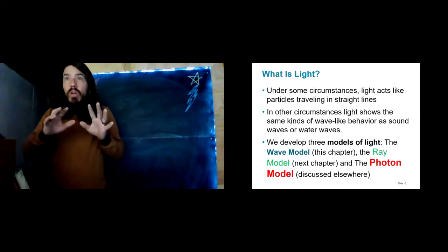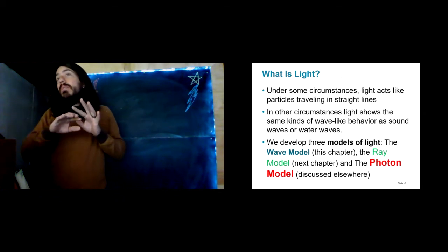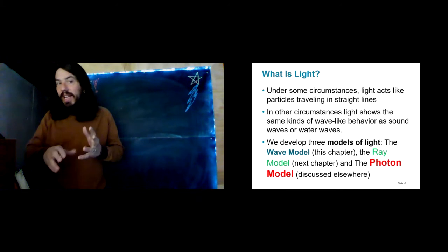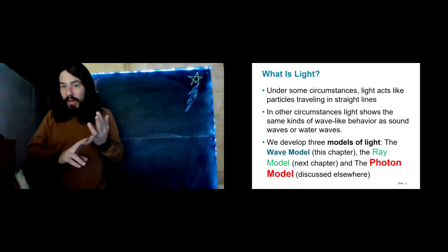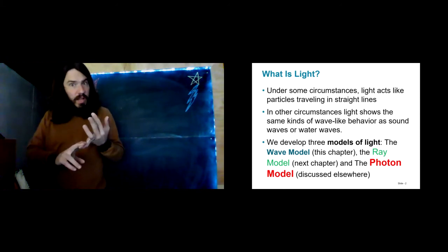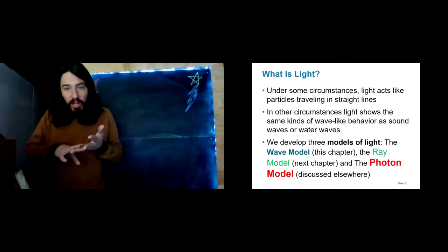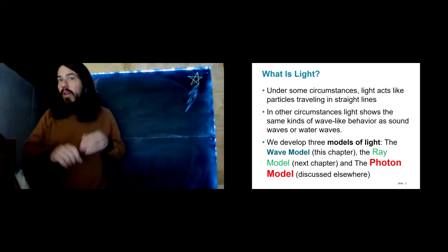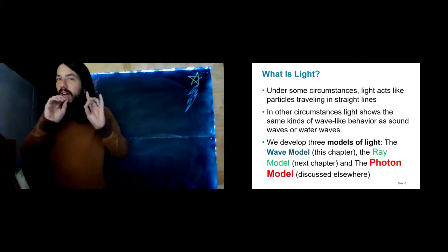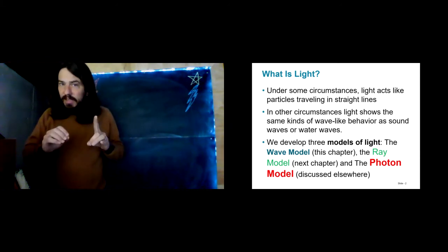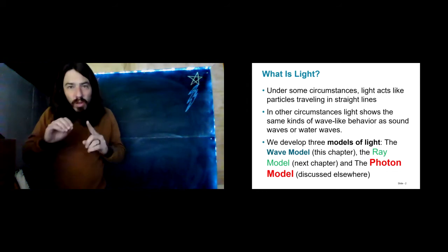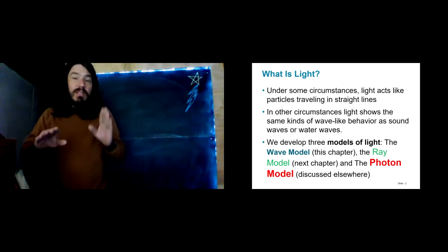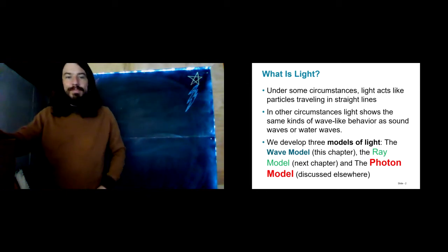In this semester, we're developing three models of light. There's the wave model, which is what we're talking about here. There's the ray model, which is in the next chapter. And there's the photon model, which we've begun discussing but will go into more depth toward the end of the semester if we have time.